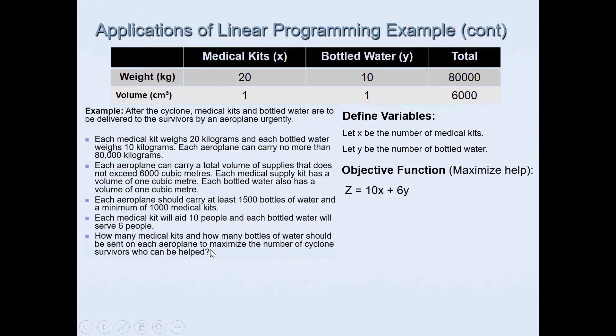Then we look at the objective function. The objective function says that each medical kit will aid 10 people, so it's 10X. Plus each bottled water, which is variable Y, will save 6 people. So 10X plus 6Y is our objective function. That's what I've got there. And then, of course, using the restrictions or constraints given, we can form the inequality.